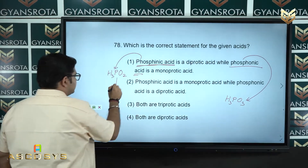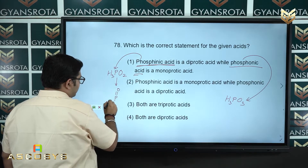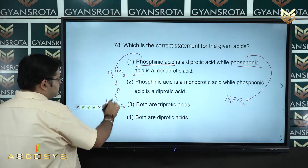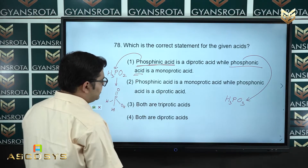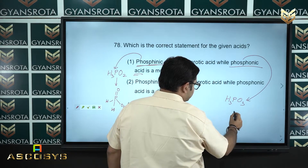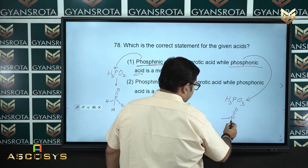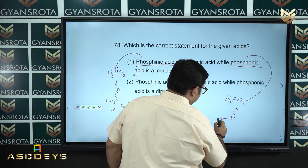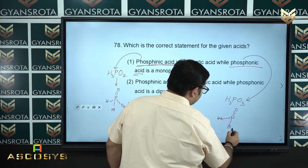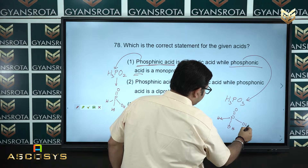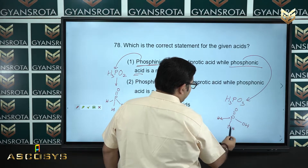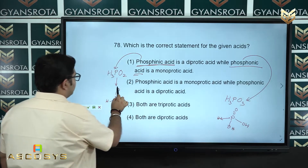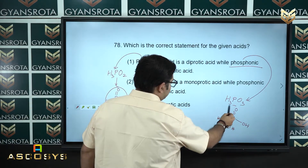The structure of H₃PO₂ has P double bond O, one H directly on P, one H on P, and one OH group. For H₃PO₃, the structure has P double bond O, one H directly on P, and two OH groups.